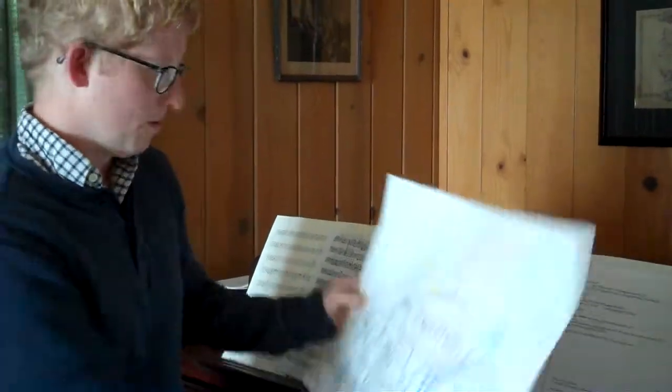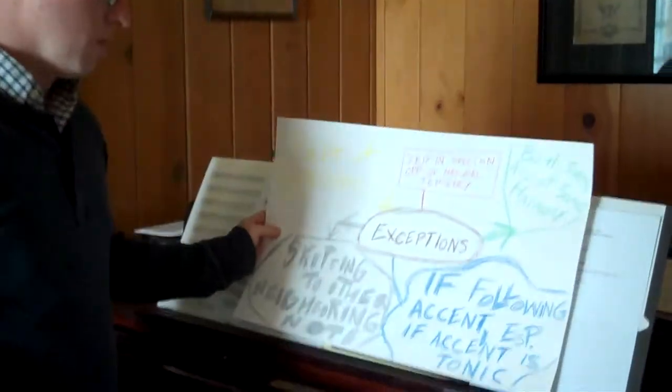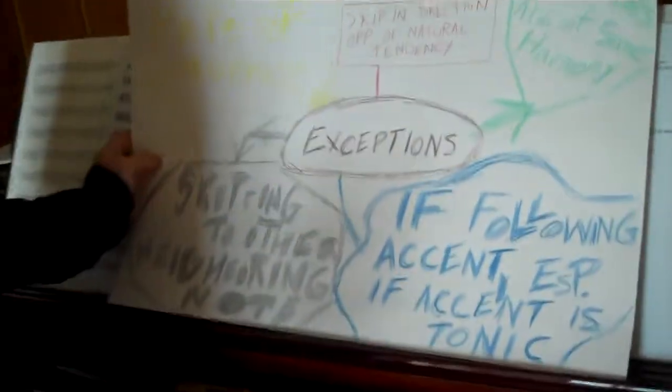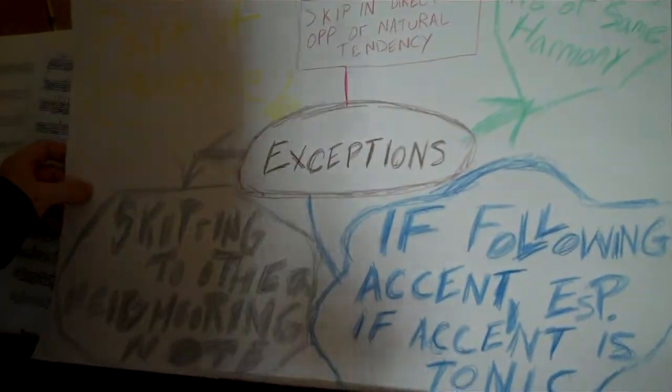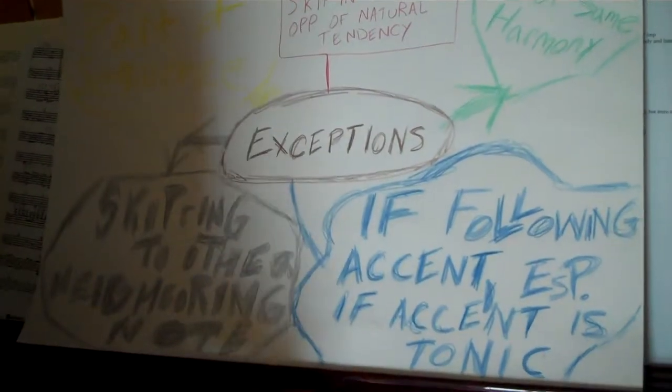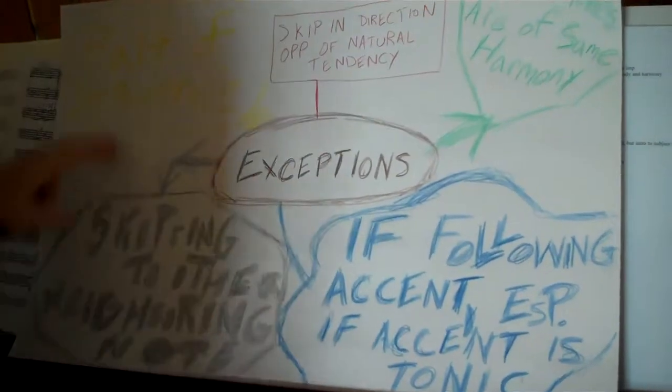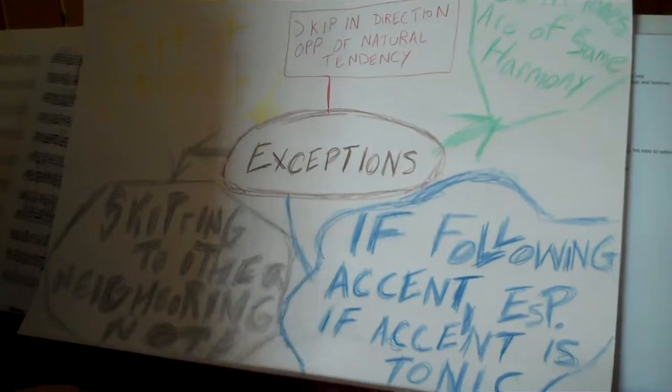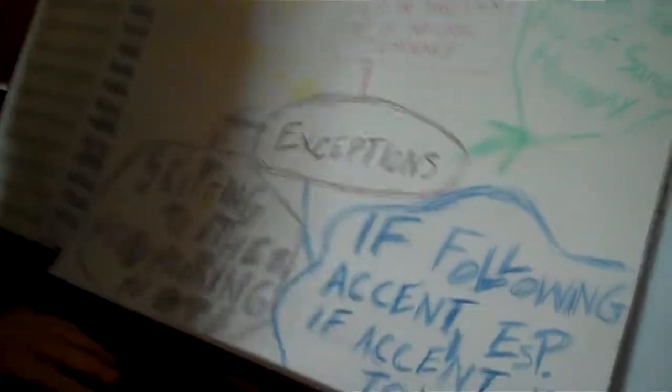So I have here what I believe are the five most common exceptions to that rule, that conjunct is preferable to disjunct. We're going to look at each of these in detail and see when those exceptions can be made.